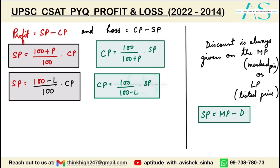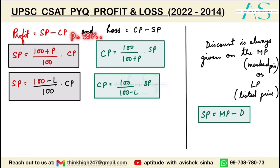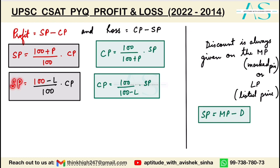Most questions give you the profit percent or loss percent along with the cost price, and ask you to find the selling price. If profit is 20%, selling price is calculated as (100 + 20) / 100 × CP. Similarly, if there is a loss of 20%, selling price is (100 − 20) / 100 × CP.